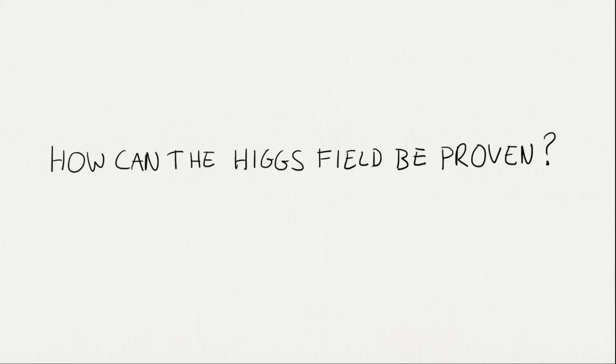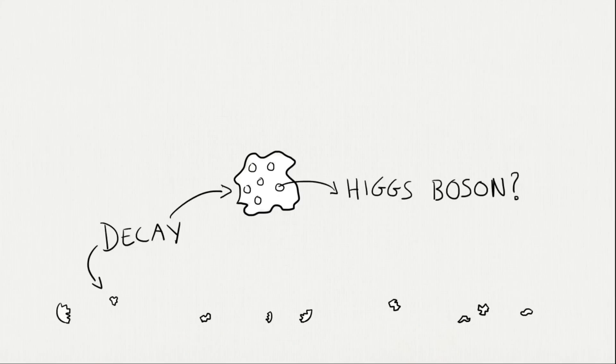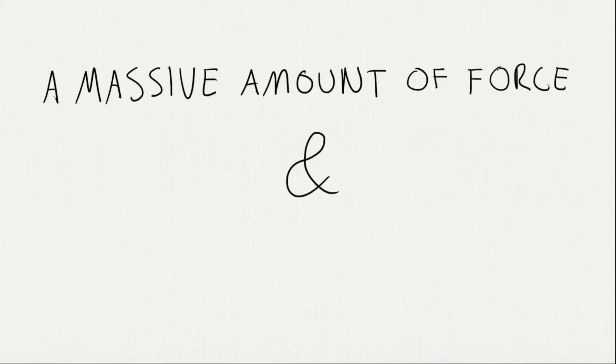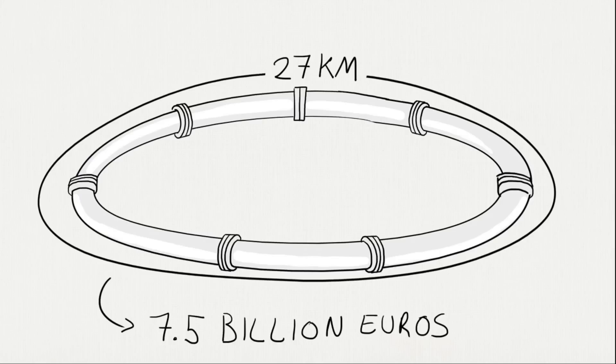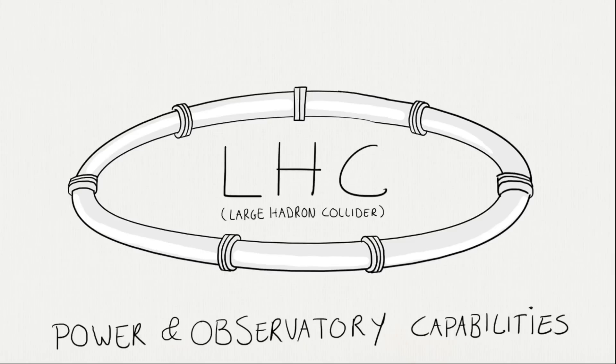So how can the Higgs field be proven? Well, you need to collide two particles and study the decay, and see if it contains part of the Higgs field, called a Higgs boson. But a massive amount of force and some super-quick measuring instruments are needed. For that reason, CERN created the impressive LHC near Geneva. The LHC has the power and observatory capabilities to discover a Higgs boson.